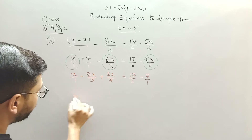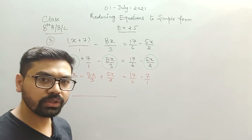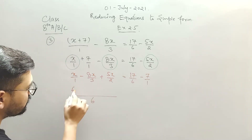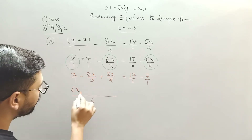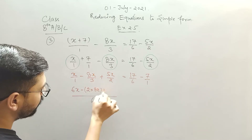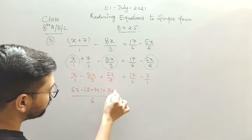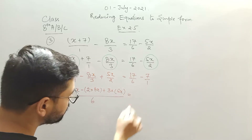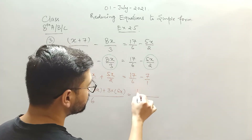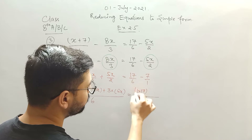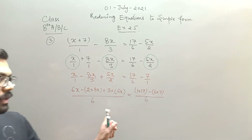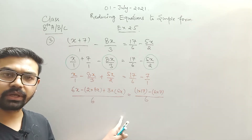Now take the LCM of 1, 2 and 3, which equals 6. So with LCM 6: 6 ones are 6 multiplied by numerator x; 3 twos are 6 multiplied by numerator 8x; 2 threes are 6 multiplied by numerator 5x. Similarly, LCM of 6 and 1 is 6, so 6 ones are 6 into 17, and 1 six is 6 into 7. All steps up to this point should be clear.